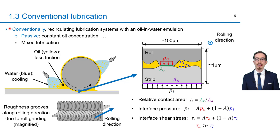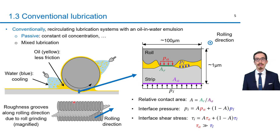Cold rolling is conventionally lubricated and cooled by recirculating lubrication systems with an oil-in-water emulsion. Such systems are passive in the sense that the lubrication conditions like the oil concentration are not continuously adapted to control friction depending on the rolling conditions. While the water in the emulsion cools the rolls and the strip, the oil is entrained into the roll bite because of its viscosity. Due to grinding of the rolls, they have a roughness with grooves along the rolling direction. The contact conditions at the micro level are represented in an orthogonal plane to the rolling direction, where the relative contact area is defined as the ratio of the real contact area between solid surfaces and the apparent contact area.